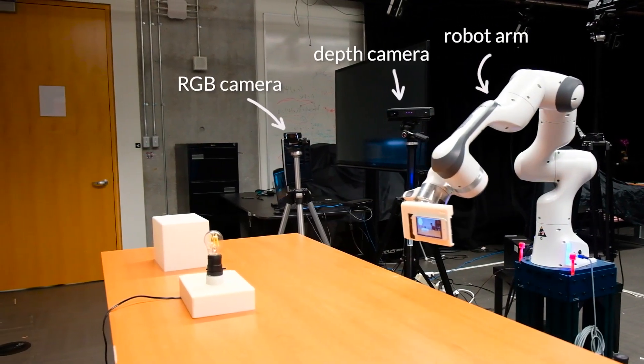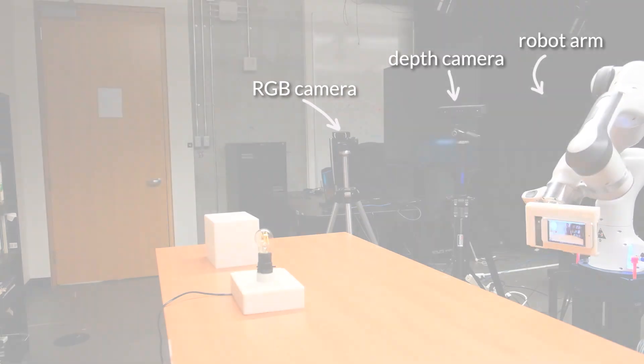Stargazer uses an RGB camera, a depth camera, and a wireless mic to sense instructor cues.